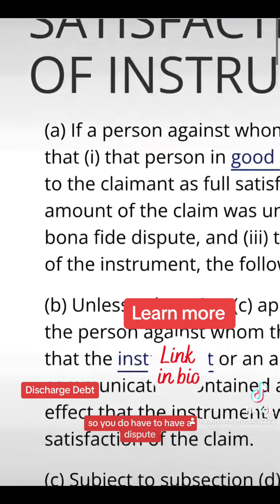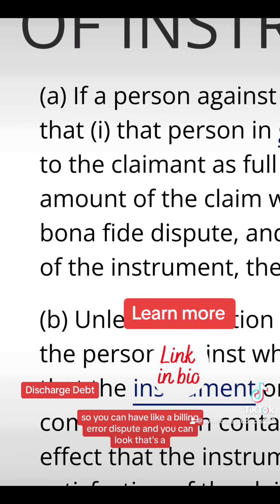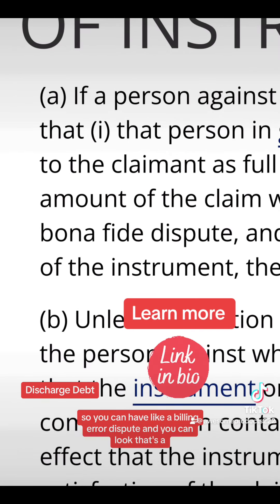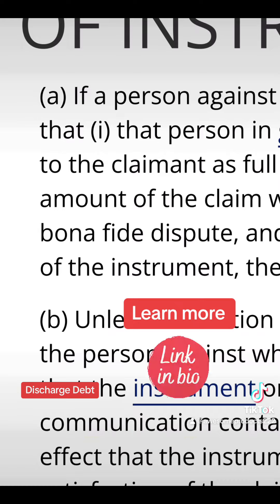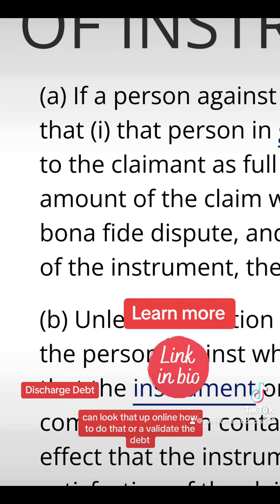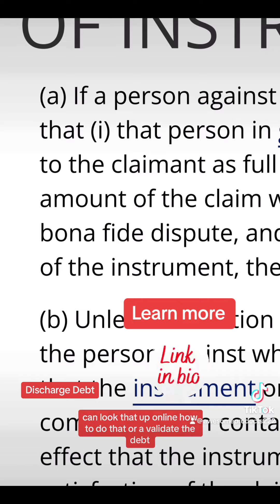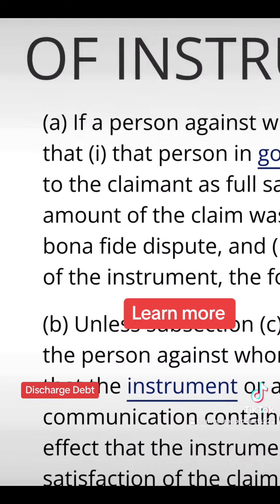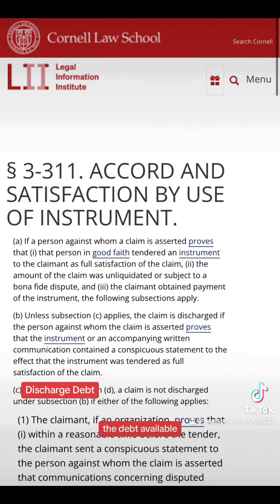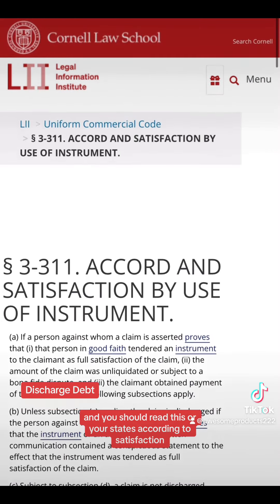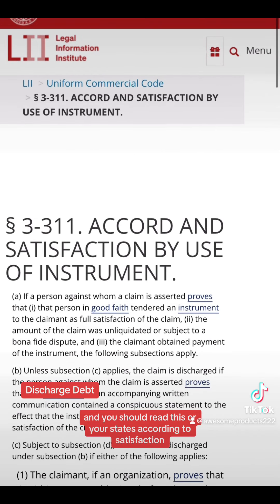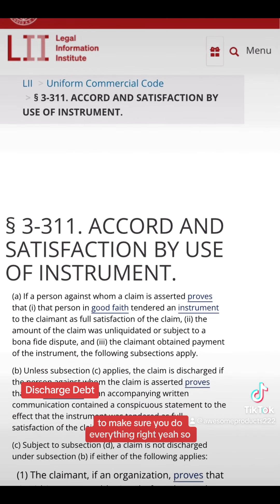You do have to have a dispute. You can have a billing error dispute — you can look that up online — or you can validate the debt. I do have a 'validate the debt' template available. You send that, establish a dispute, then tender your payment and do the accord and satisfaction. Make sure you read your state's accord and satisfaction code to do everything correctly.